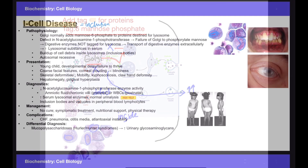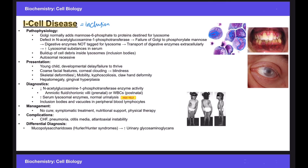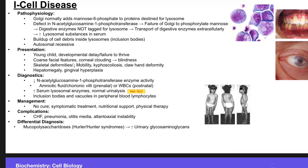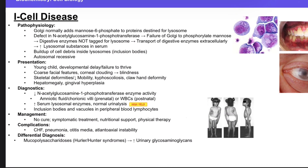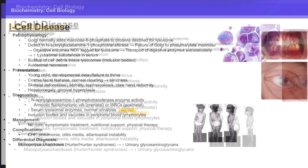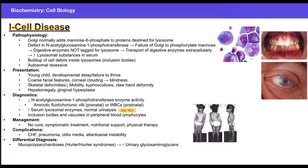Examiners will mostly present I-Cell disease as the following scenario: a child brought to the pediatrician who is underweight, has a short neck, a depressed nasal bridge, difficulty moving, skeletal developmental issues, and most importantly coarse facial features. The patient may also present with gingival hyperplasia and corneal clouding.